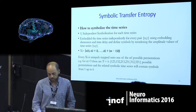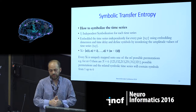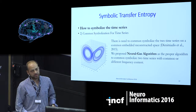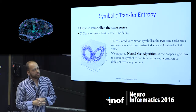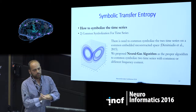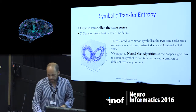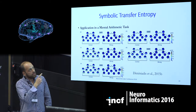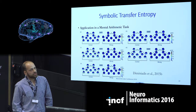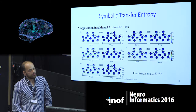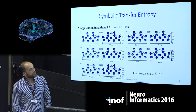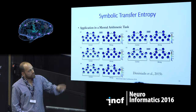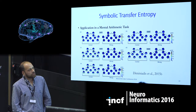We propose the neural gas algorithm instead. Using the famous Lorenz system, you reconstruct both time series into the same space and find common symbols between the two time series. This is demonstrated in the mental arithmetic task with five levels, starting from summation of two single-digit numbers up to level five, which is summation of two three-digit numbers. And you can clearly see the drive of frontal theta to parietooccipital alpha-2 in correct trials compared to wrong trials.